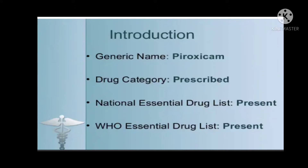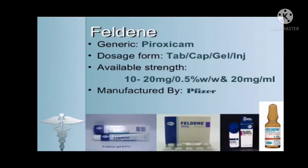Drug category: prescribed — meaning it is not used as an OTC drug. It is present on the National Essential Drug List and the WHO Essential Drug List. Risk is present. Feldene is a brand name of piroxicam, available in dosage forms of 10 to 20 mg tablets, 0.5% w/w gel, and 20 mg/ml injection, manufactured by Pfizer.